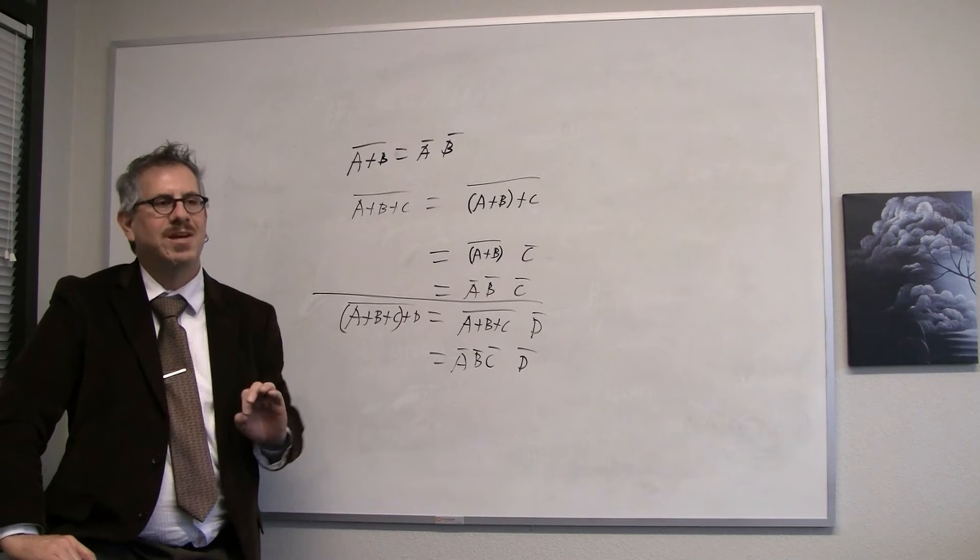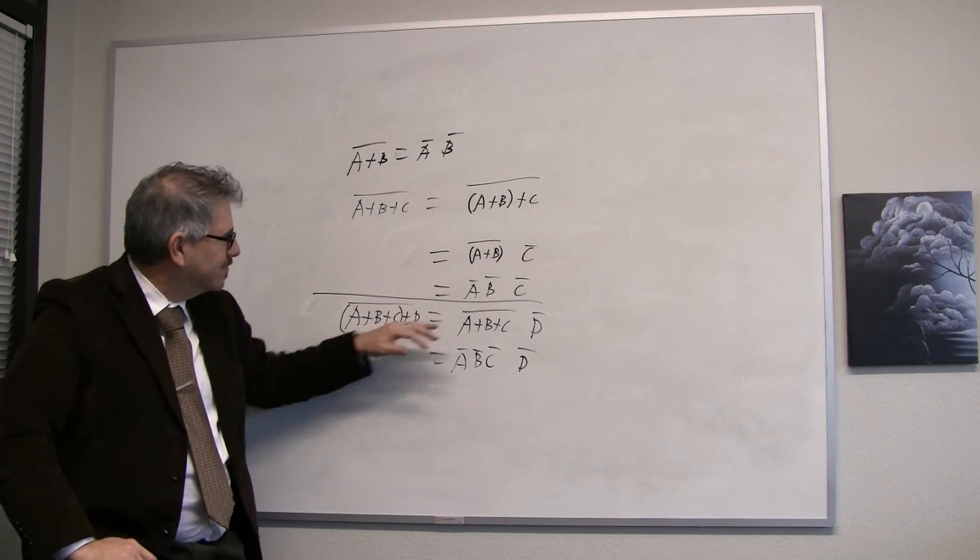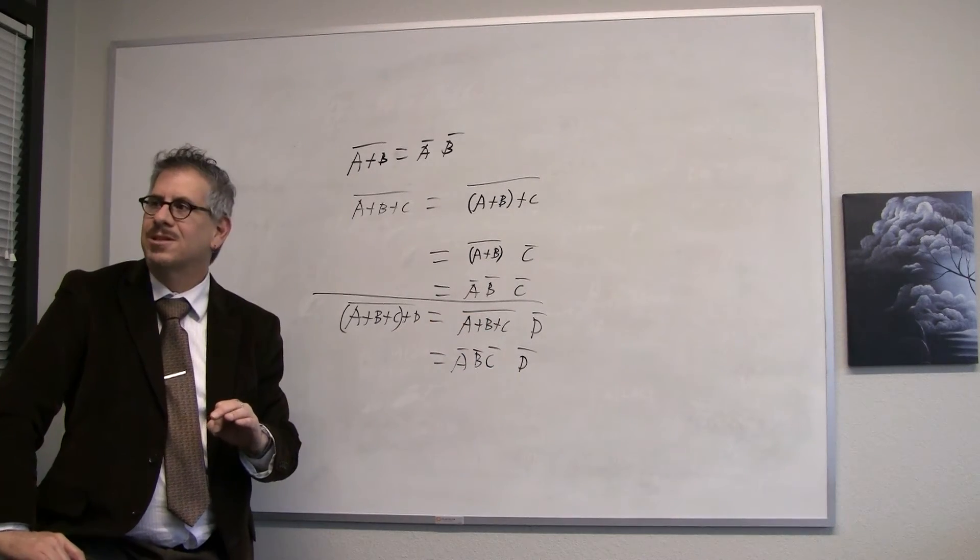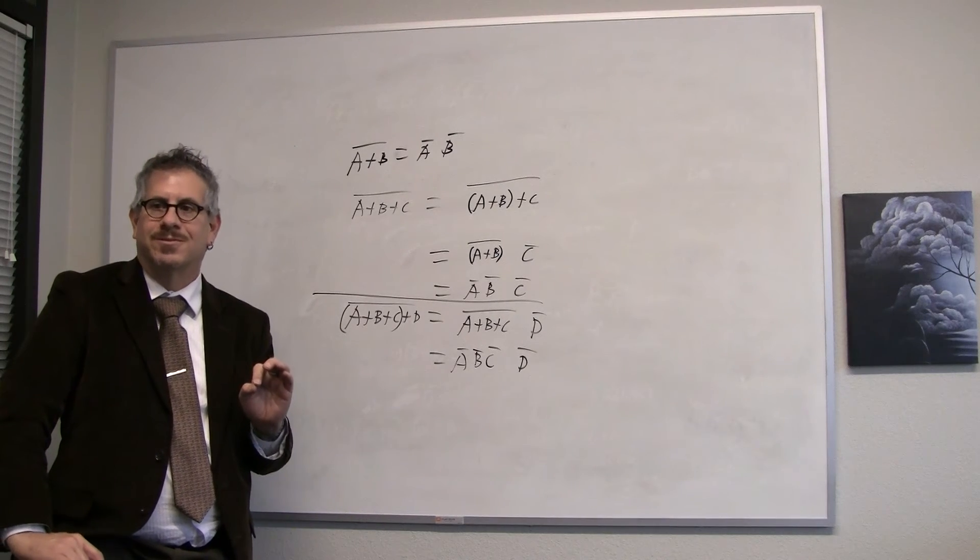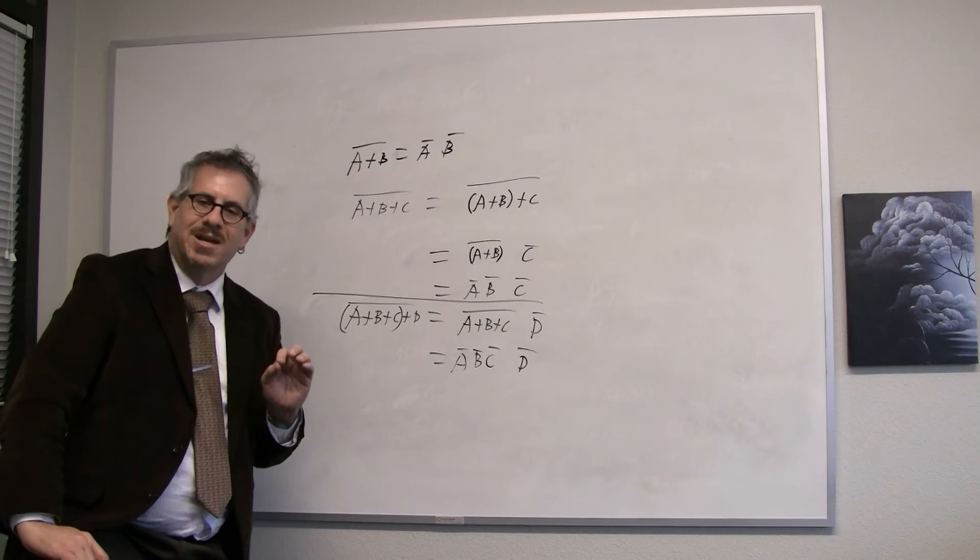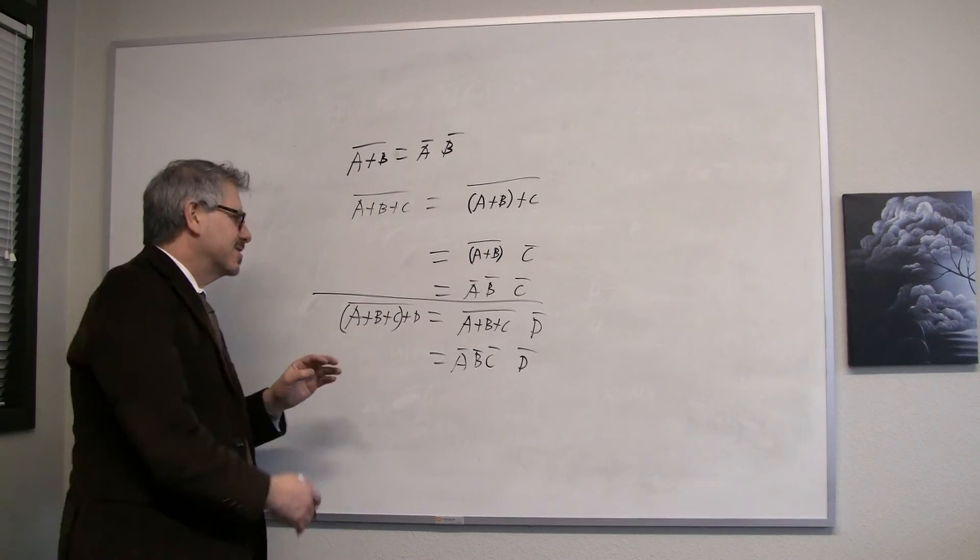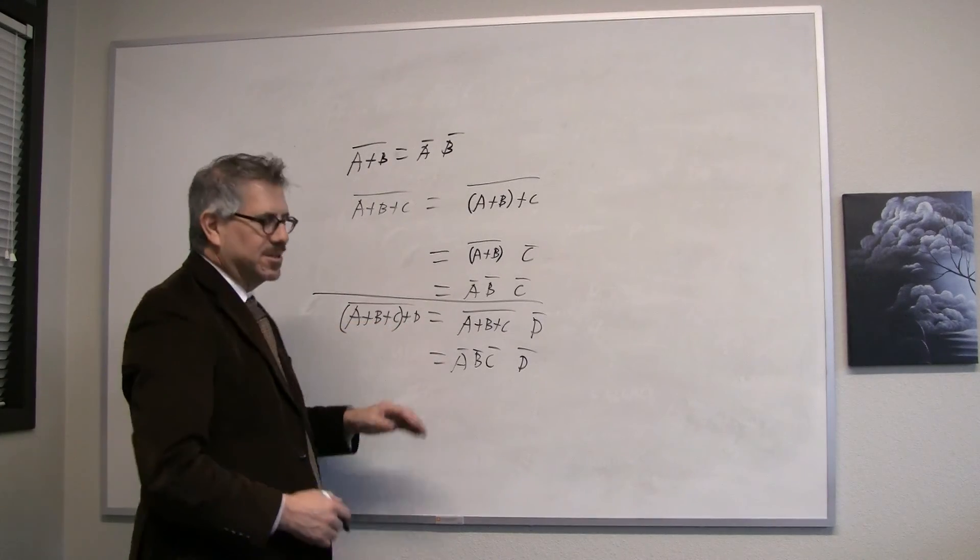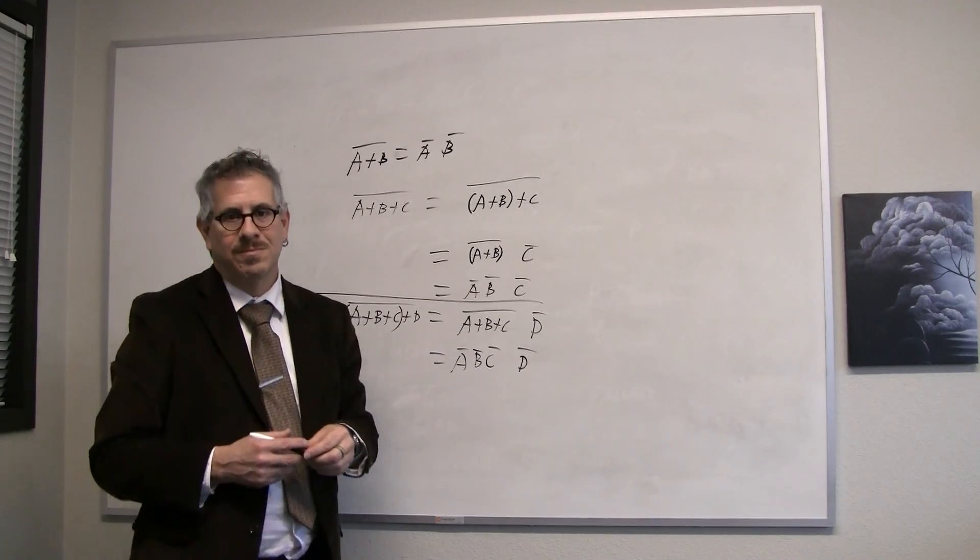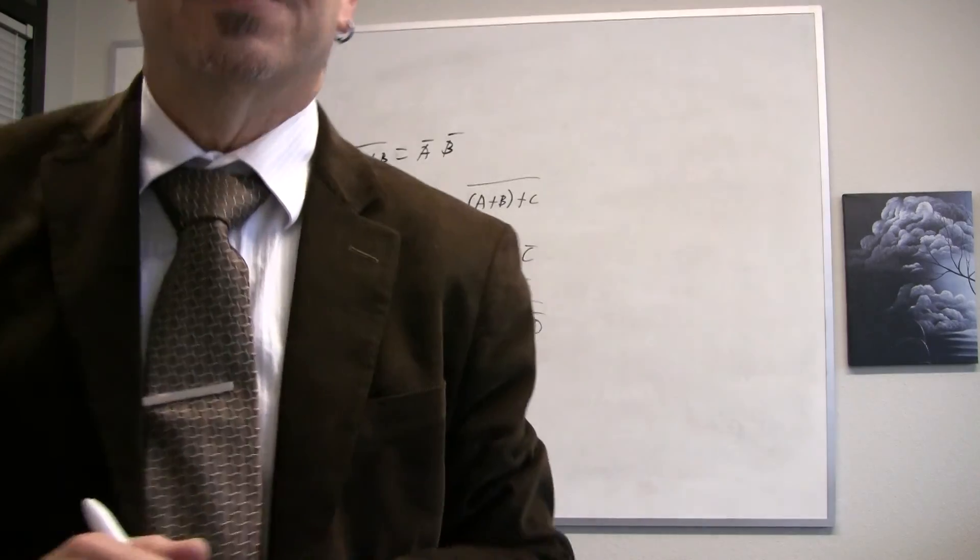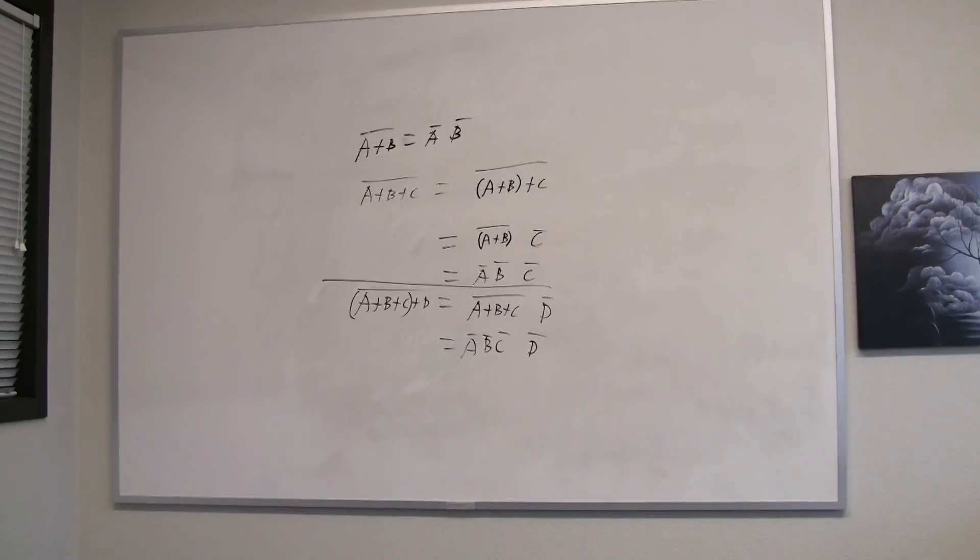But how do we prove that? How do we say that if we did a hundred variables ORed them and took the complement, that would be the same as the AND of the complements of all hundred variables. That's what mathematical induction does for us. It lets us take this thing that we know how to go from one step to the next, and say therefore we can do this for all steps. Let's look at the mechanics of that next.